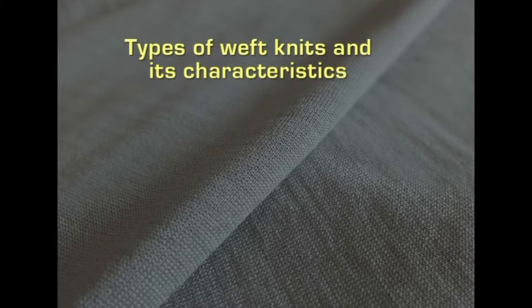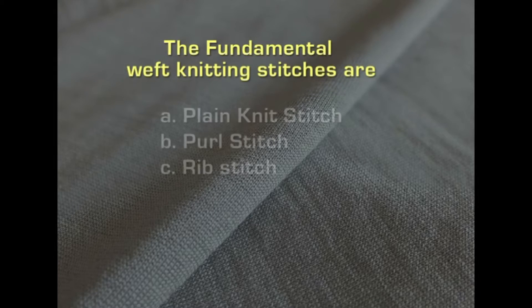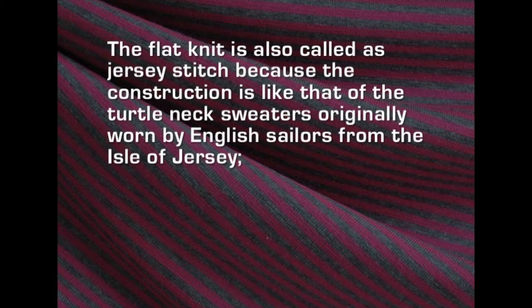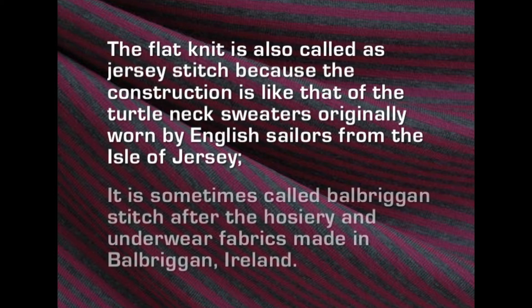There are three fundamental stitches in weft knitting, and novelty stitches are variations of these three. The fundamental weft knitting stitches are the plain knit stitch, purl stitch and rib stitch. The plain knit is the basic stitch used in a majority of knits. It is also called the jersey stitch because the construction is like that of the turtleneck sweaters originally worn by English sailors from the Isle of Jersey. It is sometimes called the Balbriggan stitch after the hosiery and underwear fabrics made in Balbriggan, Ireland.